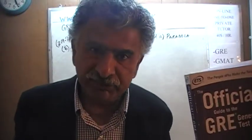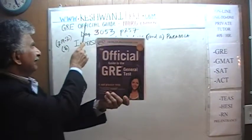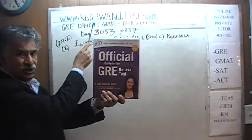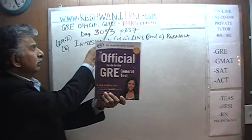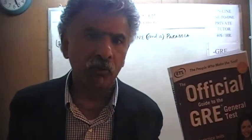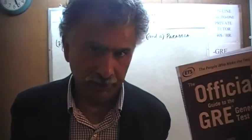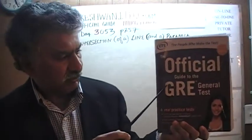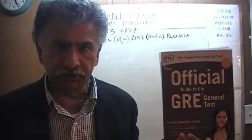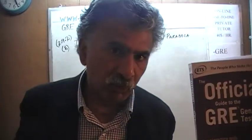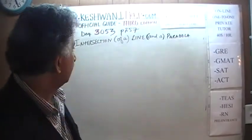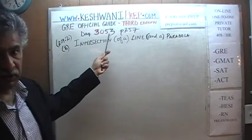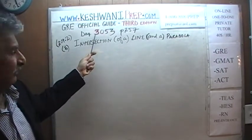Hello, my name is Keshwani — that's K-E-S-H-W-A-N-I. We are here because we want to prepare for the GRE. We have been solving math problems out of this book, the Official Guide to the GRE, the third edition. If you do not own this book already, purchase one immediately — you are going to need it. Today is our lesson number 53, lesson 53 out of the third edition, hence 3053.